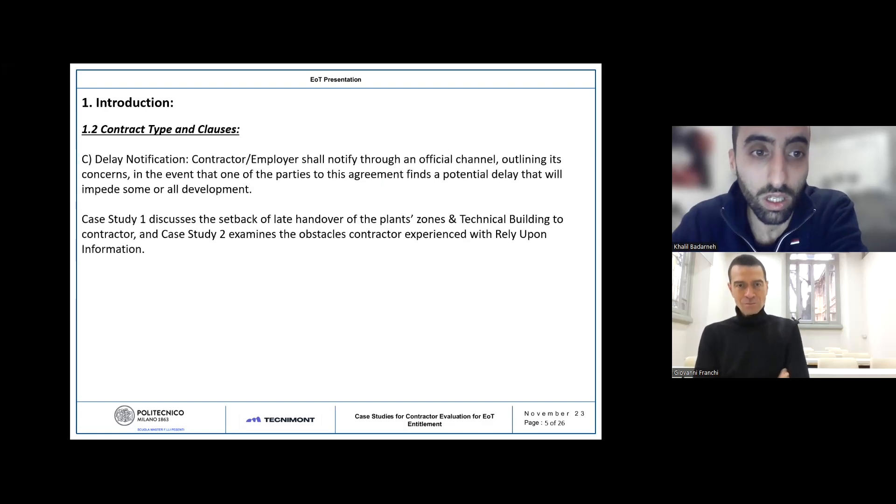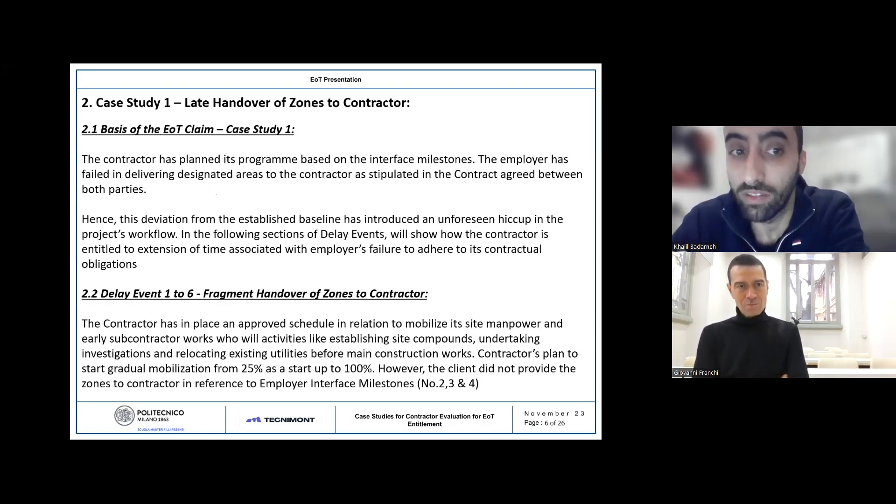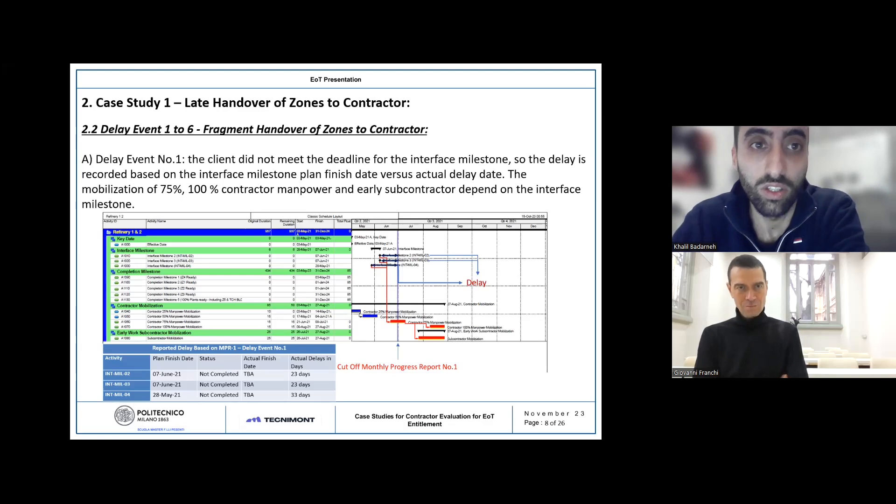We have three delay events which were major ones that the contractor suffered. As we can see here, the contractor planned his activities to proceed with the work. Khalil, you performed a delay analysis? Yes, for your master thesis. Exactly. What I learned from the master, I put it here. Here's an example where the contractor was planning to proceed; however, these did not achieve the date by the employer.